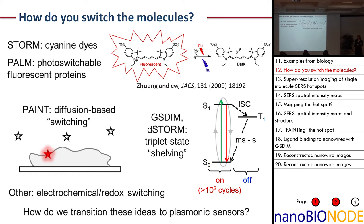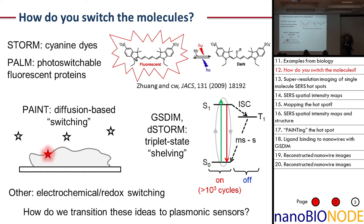One question that often comes up is how do you actually turn these molecules on and off? This is the whole origin of those crazy acronyms. The folks who do STORM or PALM use photo-switchable dyes. For example, STORM is based on cyanine dyes where you can use different colors of laser excitation to toggle between a fluorescent and a dark form. There are also diffusion-based techniques known by the acronym PAINT. The basic idea is you have molecules diffusing in solution that are either non-fluorescent or diffusing so fast you can't see emission from a single molecule, but when a molecule binds to the surface it suddenly becomes emissive and you can localize its position.